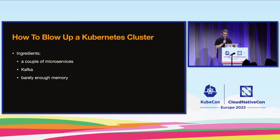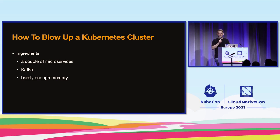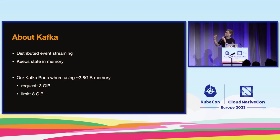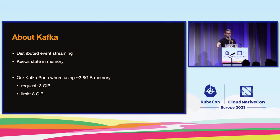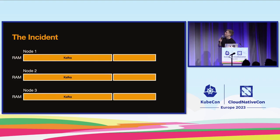The ingredients to blow up our cluster: we were running a couple of microservices communicating via Kafka, with barely enough memory in the cluster. A quick note on Kafka — if you're not familiar, it's used for distributed event streaming and asynchronous communication. What's important here is that Kafka uses a ton of memory and keeps its entire state in memory. Our Kafka pods were typically using about 2.8 gibibytes, but we saw spikes, so we set the request to three gibibytes and the limit to eight gibibytes.